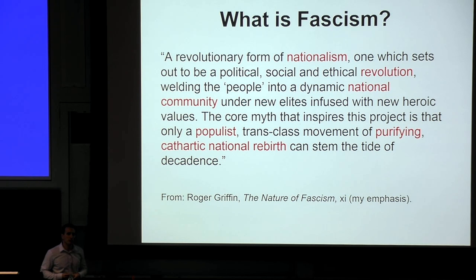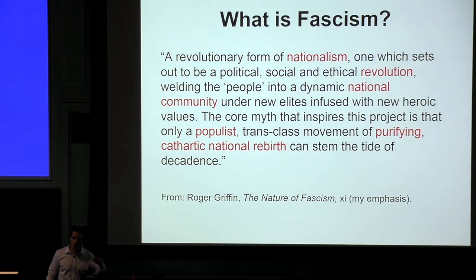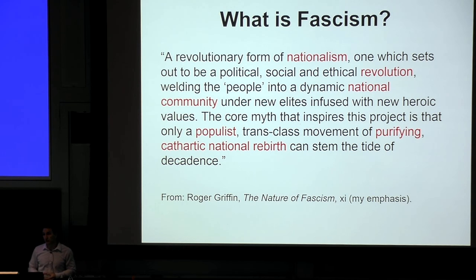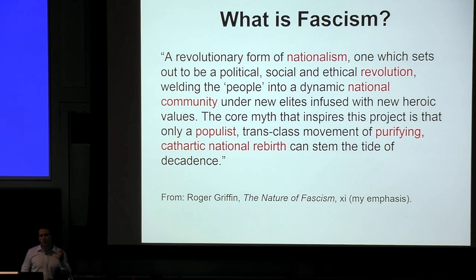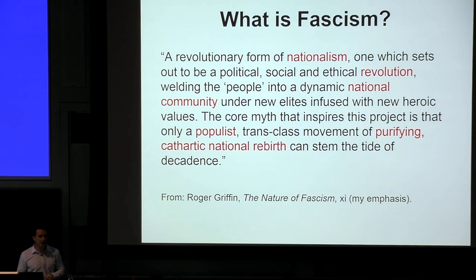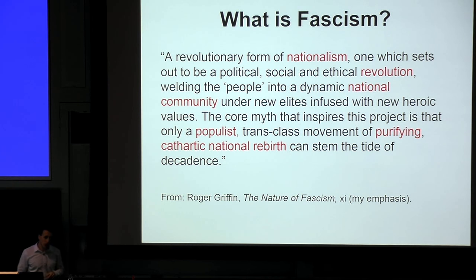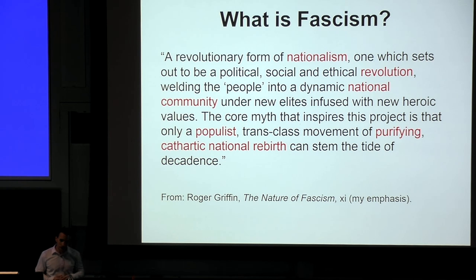The last part is very important: fascism aims to stem the tide of decadence, because there's a sense of fallenness. For Germany, that fallenness was World War I and all the strictures the Versailles Treaty placed on Germany — reparations, taking away colonies, restricting the military. You had four million wounded war veterans returning, almost two and a half million Germans killed, and a country in tremendous political, cultural, and economic turmoil. That's the crisis. The sense of fallenness also usually has a pointer — someone has caused this. That's the scapegoat. Fascism always needs a scapegoat, always needs someone or a group to blame.